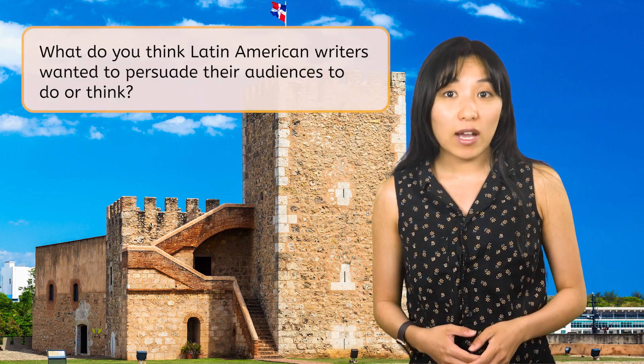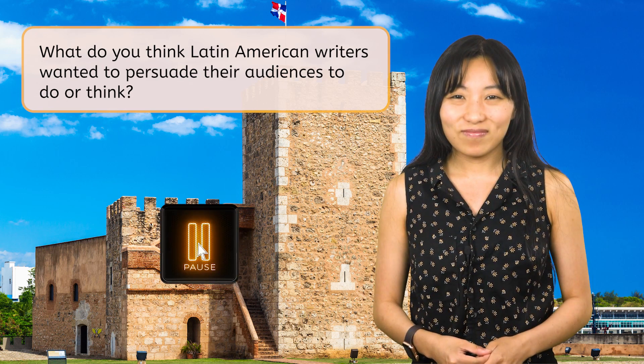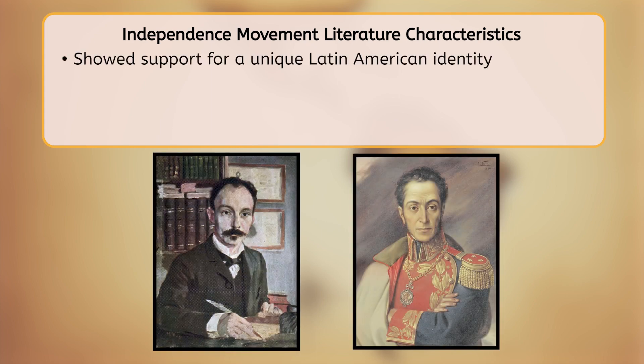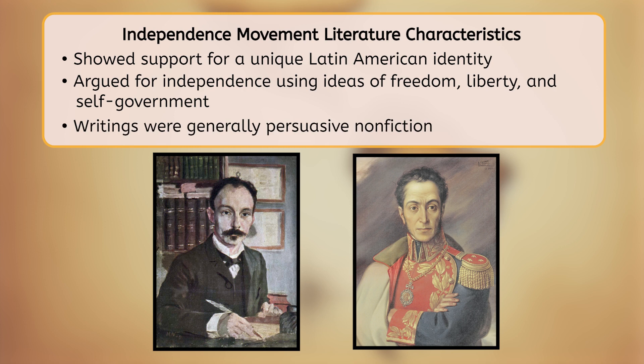identity, and politics. However, Latin American independence literature is unique in many ways. For example, the writings were mostly persuasive in nature. We know that persuasive nonfiction is intended to convince the audience to think or do something. During the Latin American independence movements, revolutionaries like José Martí and Simón Bolívar wrote arguments in support of a unique Latin American identity that combined elements of European, African, and indigenous cultures. They also argued for independence using the ideas of freedom, liberty, and self-government that were popular at the time. Most of these writings were persuasive nonfiction, but some were in other genres, such as poetry.